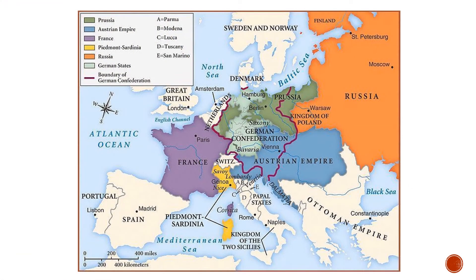Here you can see a map of Europe after the Congress of Vienna. Notice first of all that there is no country of Germany yet — there is only that loose trading alliance, the German Confederation. But there's no country called Germany yet; that is in the future.